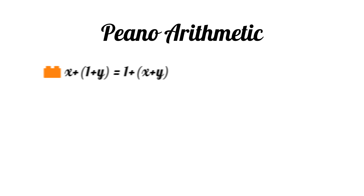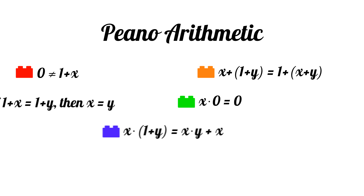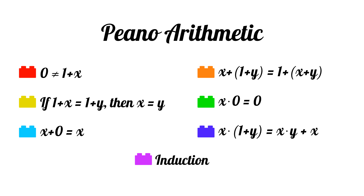For example, let's look at a math system called Peano arithmetic. Peano arithmetic is built up of just seven axioms that describe the natural numbers, addition, multiplication, and something called induction, which we'll talk about in a future video. Putting these simple axioms together allows for a powerful look at arithmetic on the natural numbers.